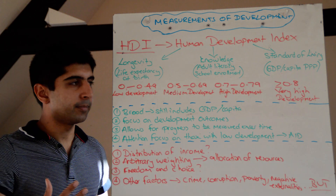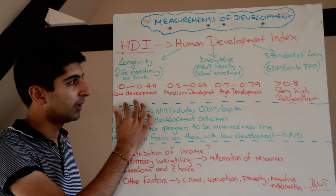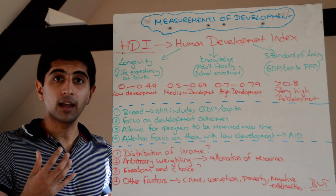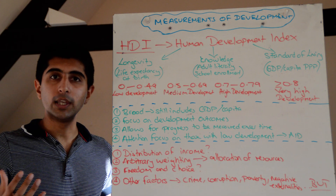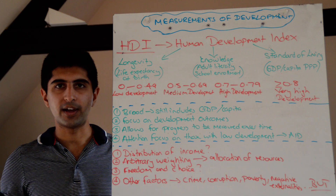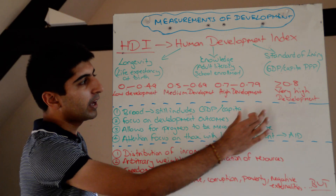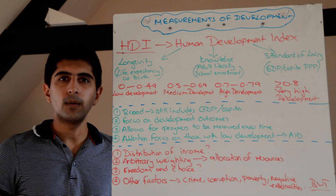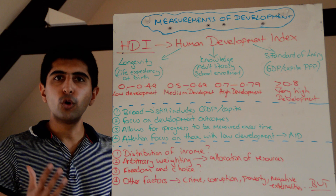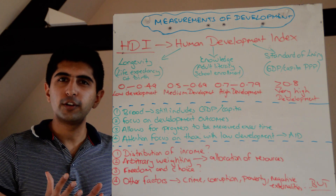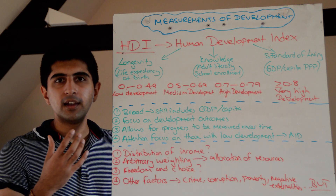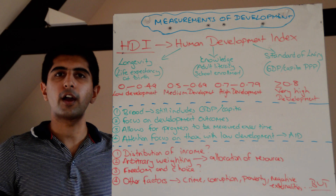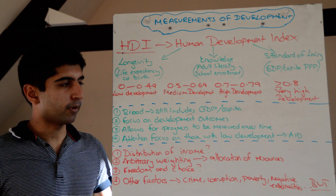They break the numbers down further: 0 to 0.49 is low development; 0.5 to 0.69 is medium development; 0.7 to 0.79 is high development; and 0.8 or above represents very high development. Countries achieving very high development include the UK, Australia, Canada, Singapore, Norway, and Denmark — all regularly featuring in the top 10. At the very low end, sub-Saharan African countries tend to dominate that bracket.